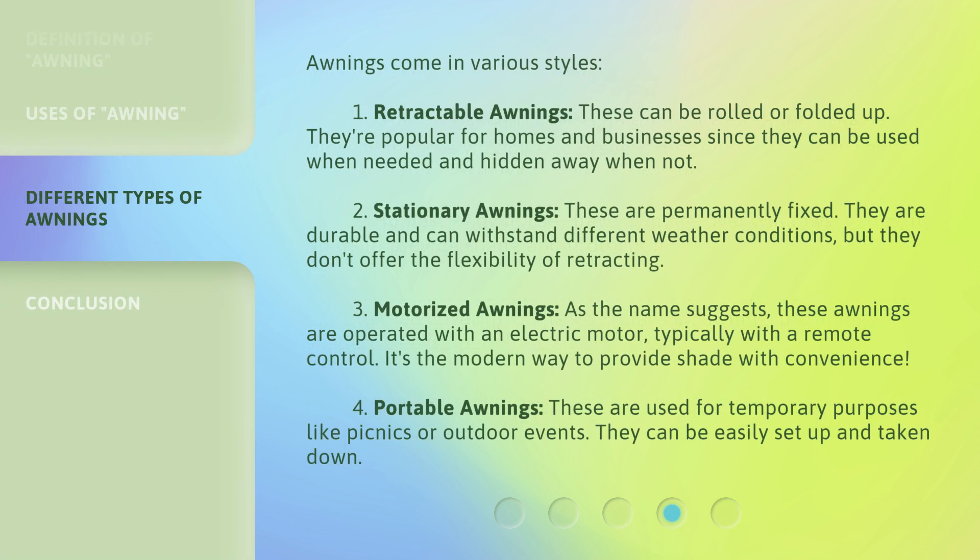Awnings come in various styles. One: retractable awnings — these can be rolled or folded up. They're popular for homes and businesses since they can be used when needed and hidden away when not. Two: stationary awnings — these are permanently fixed.